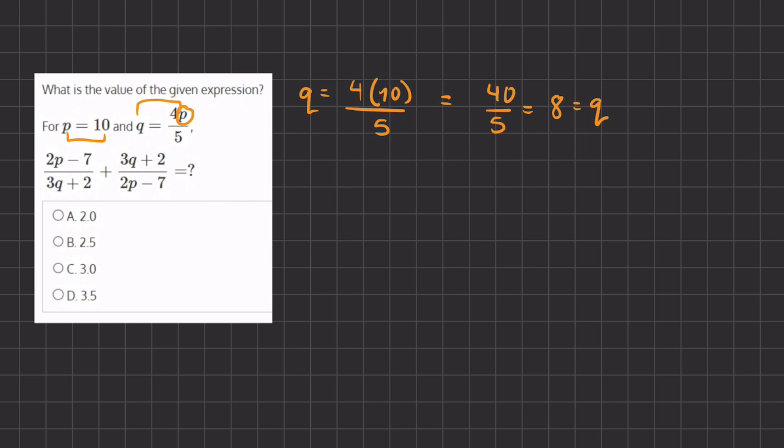So now let's plug it into our expression. We have 2 times p, which is 10, minus 7, divided by 3 times q, which is 8, plus 2. All right, so that's one of our fractions.